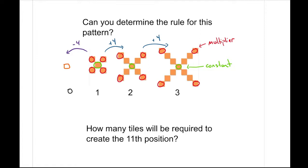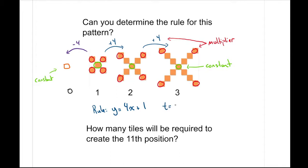So here, because we know our multiplier is the plus four, and we know our constant is that center block — which is one — that means our rule has to be the following: y equals 4x plus one. You could also say number of tiles equals four times the position number plus one.